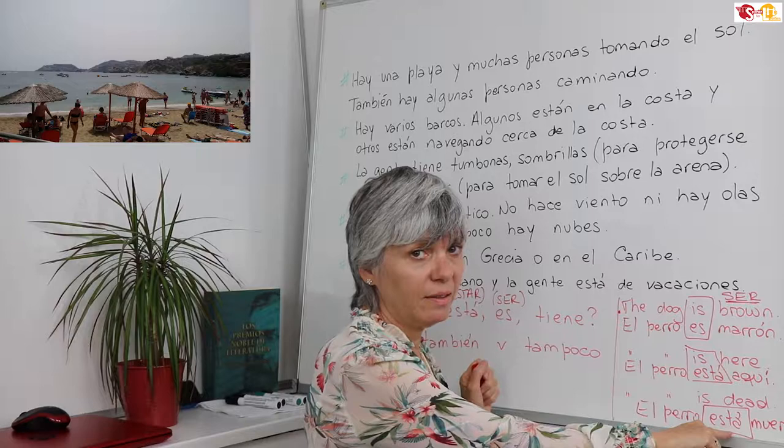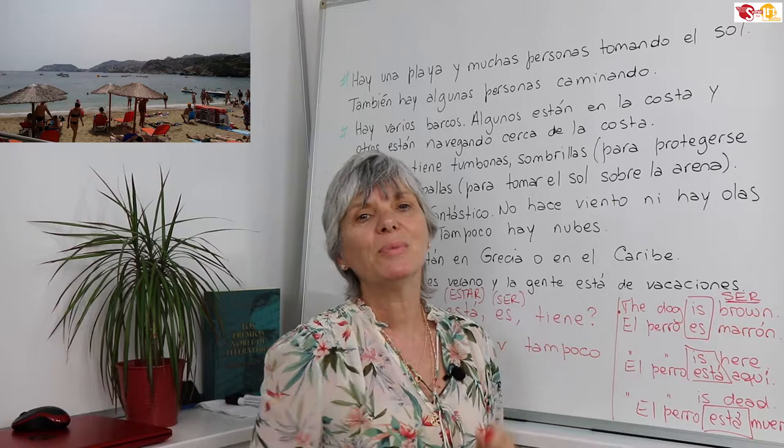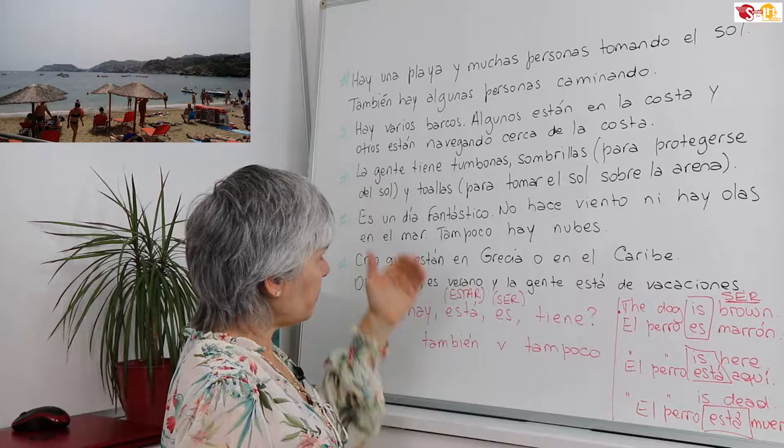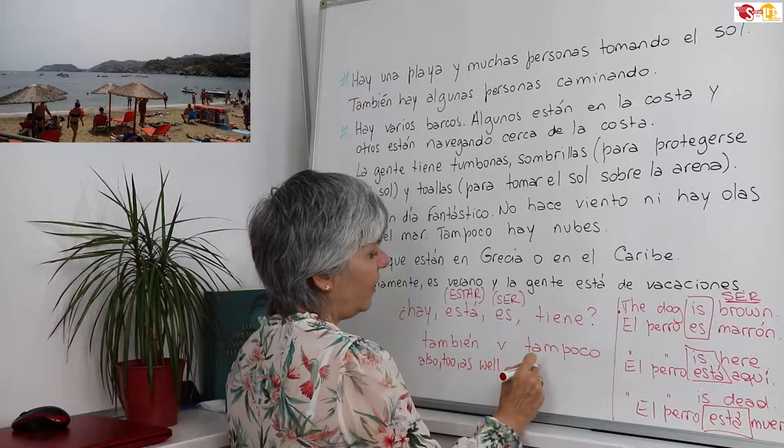Remember that you have to study ser and estar properly — there is a specific lesson about this in our whole course. So: hay, está, es o tiene — 'he or she has.' We will also see the forms también, meaning 'also' or 'as well,' and tampoco, meaning 'neither' or 'nor.'